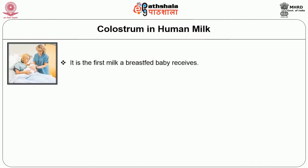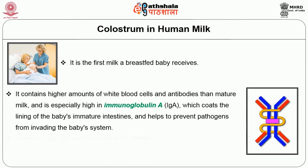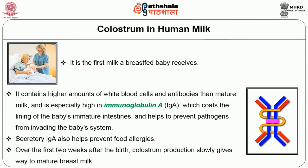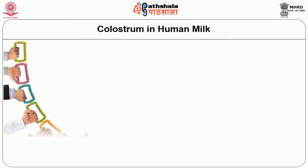Colostrum is the first milk a breastfed baby receives. It contains higher amounts of white blood cells and antibodies than mature milk. It is especially high in immunoglobulin A (IgA), which coats the lining of the baby's immature intestines and helps prevent pathogens from invading the baby's system. Secretory IgA also helps prevent food allergies. Over the first two weeks after birth, colostrum production slowly gives way to mature breast milk. Colostrum is a thick yellow fluid secreted immediately after labor and is produced during lactogenesis.